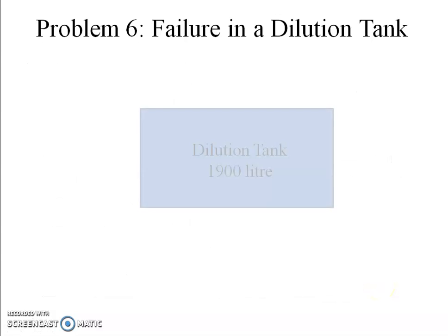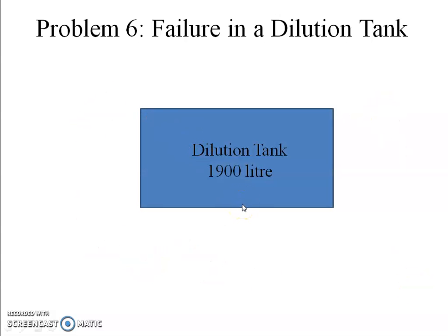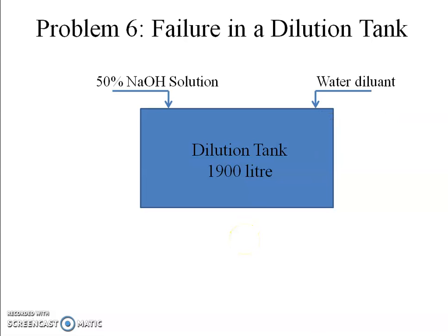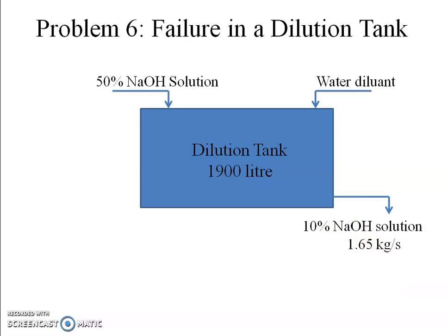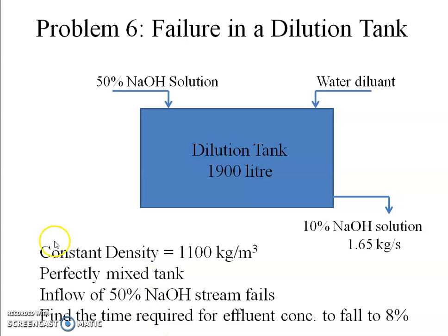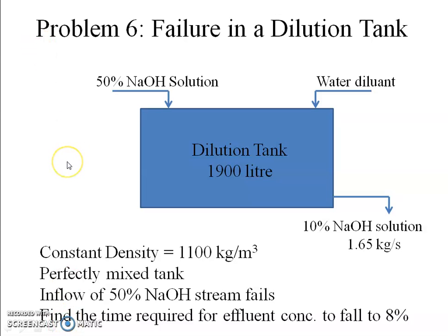I've made a flowchart for the dilution tank with 1900-liter capacity. Stream 1 is 50% NaOH; stream 2 is pure water acting as a diluent. The outlet stream leaves at 1.65 kg/s. We assume the density of the NaOH solution is constant at 1100 kg/m³ since it is dilute. The tank is perfectly mixed, so the NaOH concentration inside the tank equals the effluent concentration. The inlet 50% NaOH stream then fails, and we find the time for effluent concentration to fall to 8%.